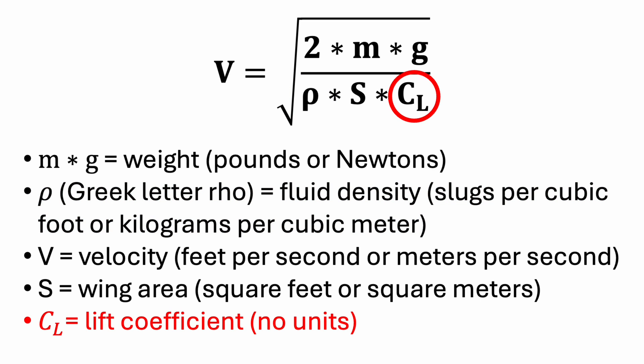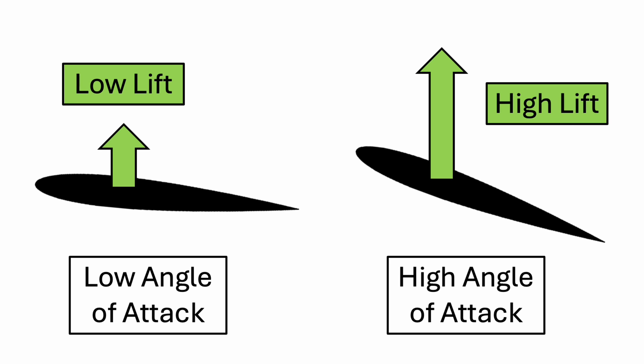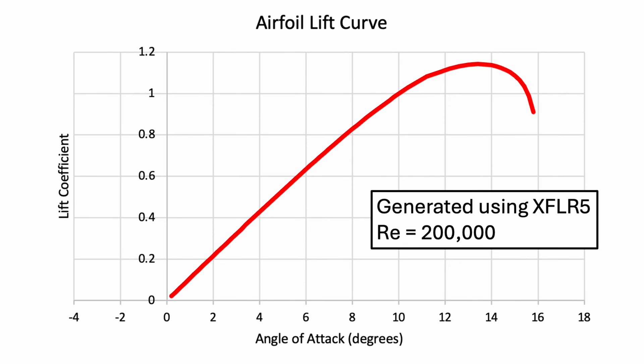That just leaves us with the lift coefficient, but to understand this concept, we're going to need to return to our airfoil. As we discussed earlier, increasing the angle of attack increases the strength of the lift force generated by the airfoil. This means that the lift coefficient is greater at higher angles of attack. This graph, called a lift curve, shows how the lift coefficient increases as the angle of attack increases.